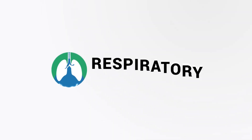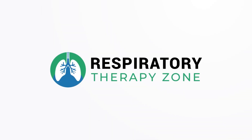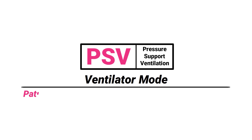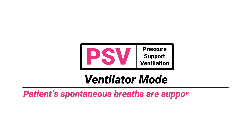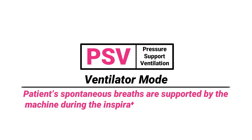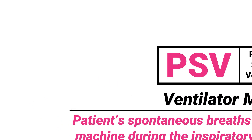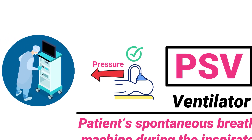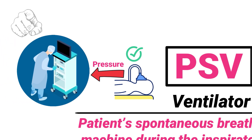PSV, or pressure support ventilation, is a ventilator mode in which the patient's spontaneous breaths are supported by the machine during the inspiratory phase of breathing. As the patient triggers a breath, the ventilator assists by adding pressure to make breathing easier. The level of pressure is preset by the operator, which means that you have control over how much support the patient is given.